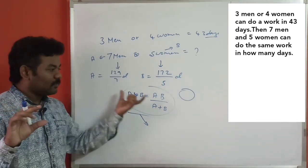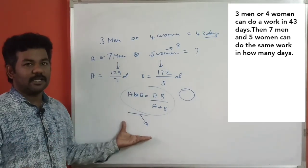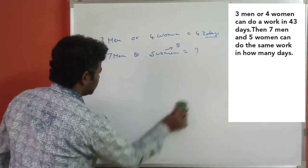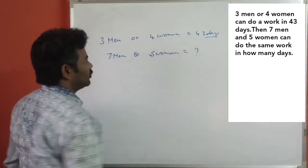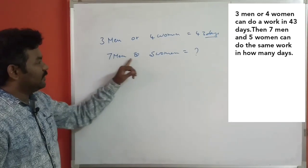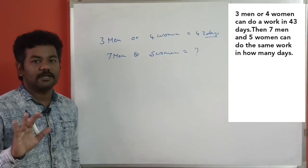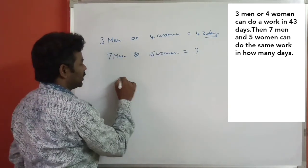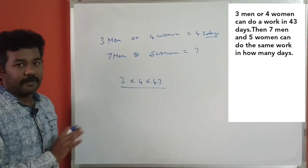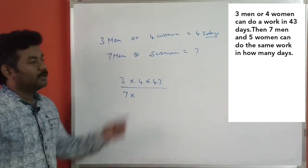We can solve the answer. Now let's solve it the smartest way. 3 men and 4 women can do it in 43 days. For 7 men and 5 women: multiply all values — 3 into 4 into 43, divided by 7 men. 7 is equal to men, 7 is equal to women.